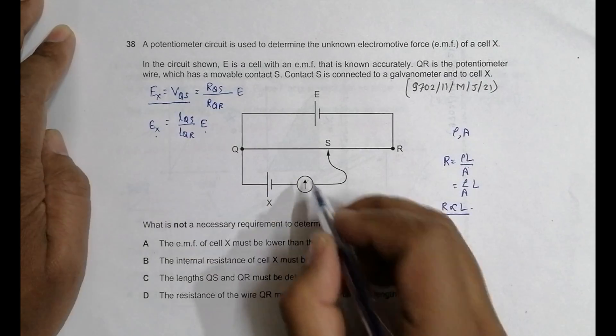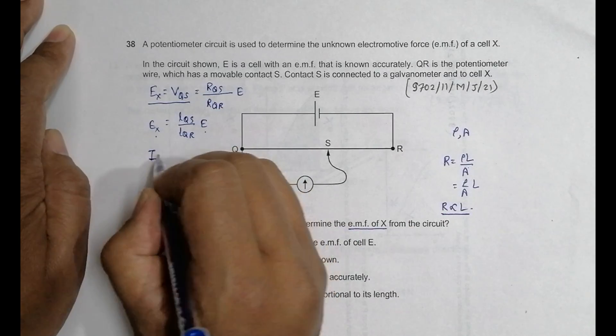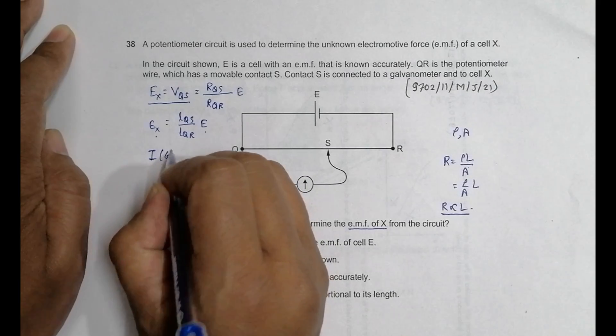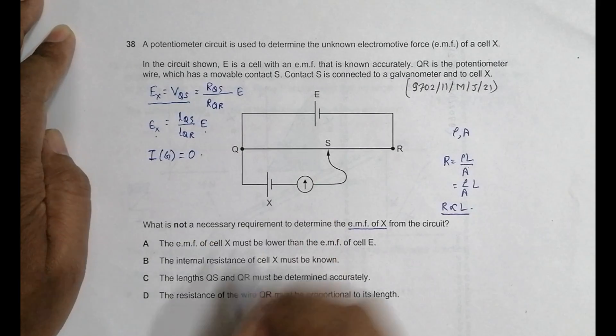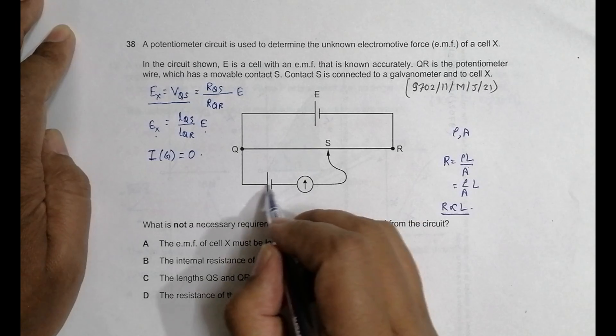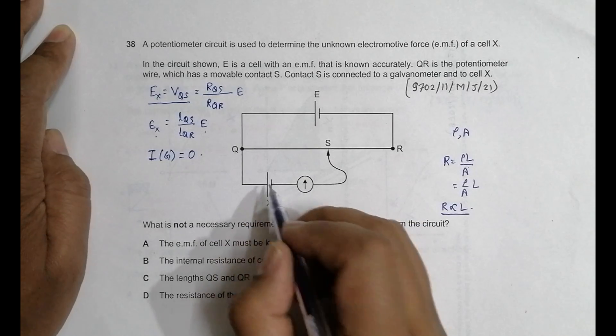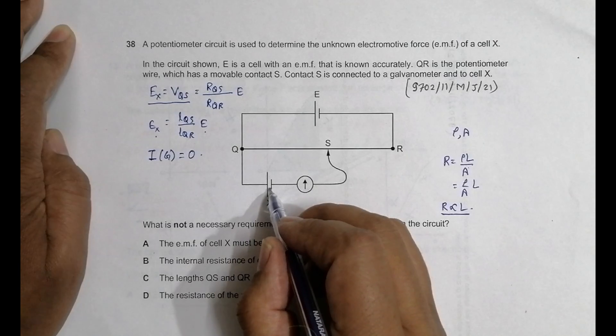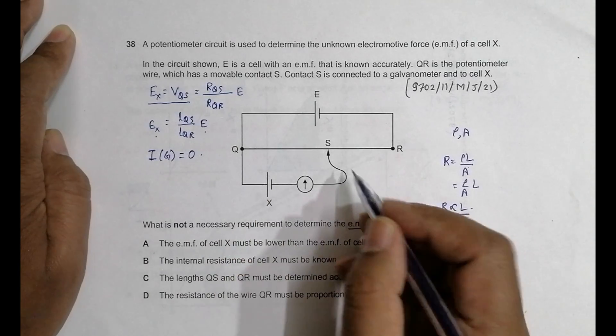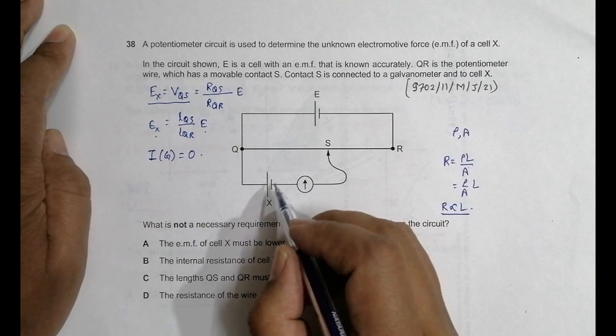It is not true because this thing happens when the current through the galvanometer is equal to 0. And when current here is 0, the current here is 0. And when current here is 0, this inner resistance is of no value.